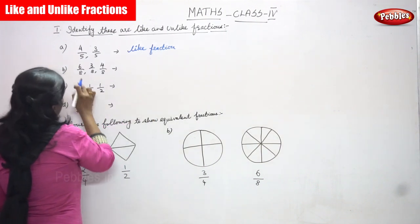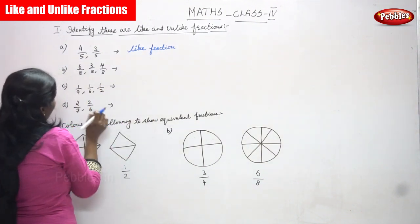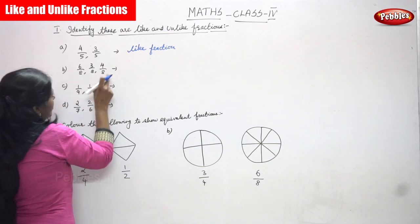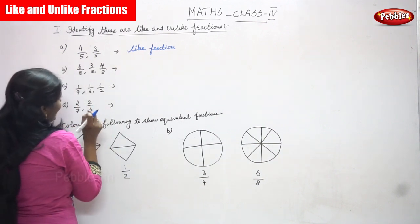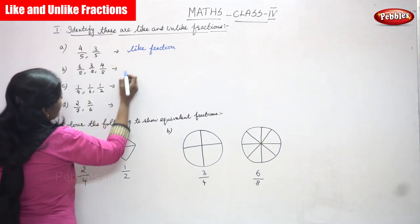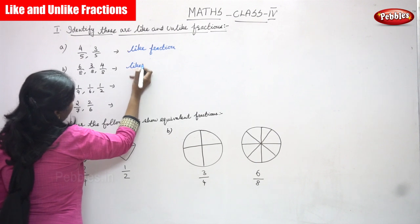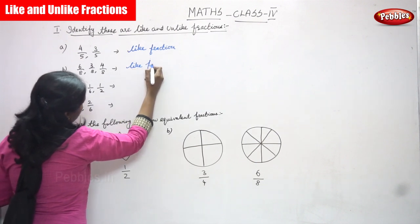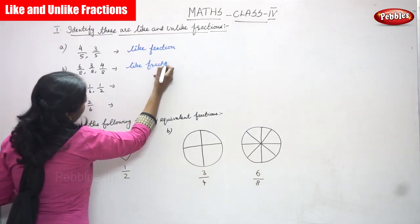Next sum: 6 by 8, 3 by 8 and 4 by 8. All the denominators are same — the denominators are 8. So it is also a like fraction.